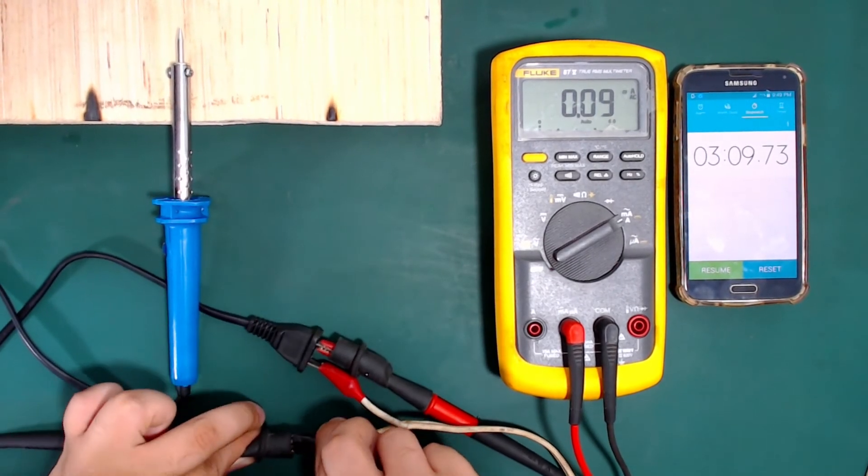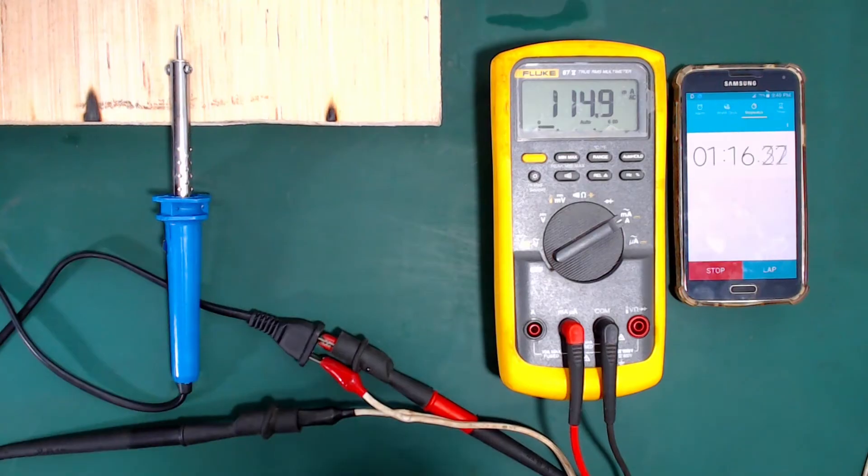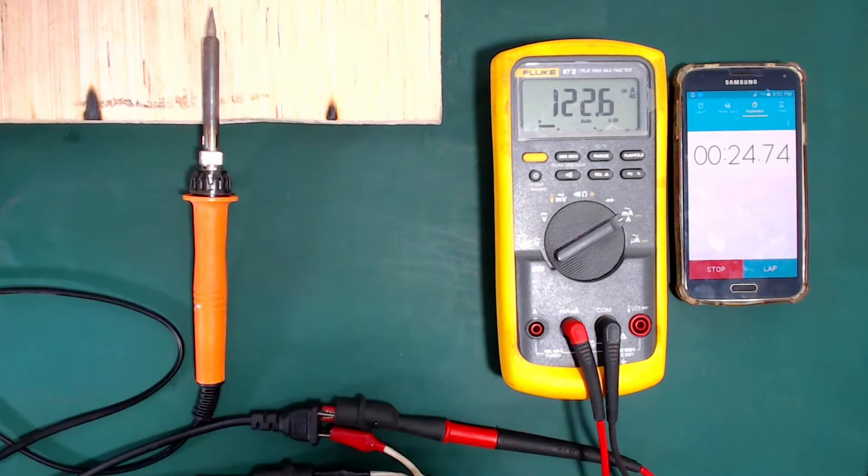First, I started to measure each of their current for about 3 minutes. And in the end, the coil type consumed at an average of 115 mA, while the ceramic type at 122 mA.